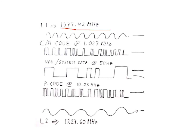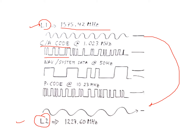Looking at the signals: L1 has a higher frequency and L2 has a lesser frequency, and you can see the comparison in their sinusoidal waveforms. On L1 there is the C/A code — the Coarse Acquisition code. This code has a random pattern of binary numbers — ones and zeros — where the interval between pulses is not constant, which is why they are called random code patterns.